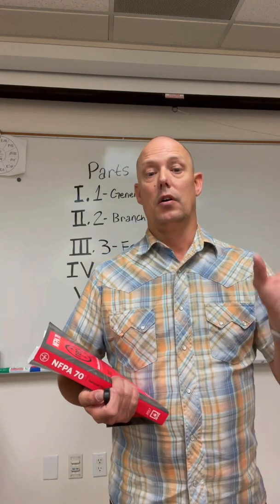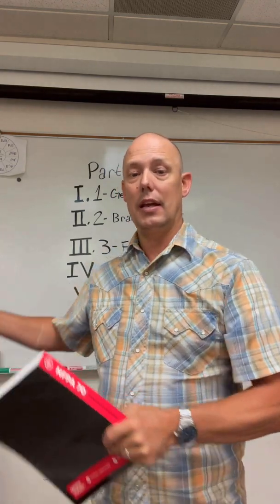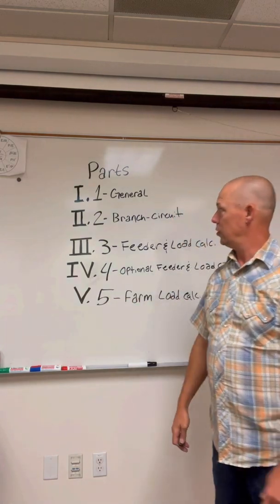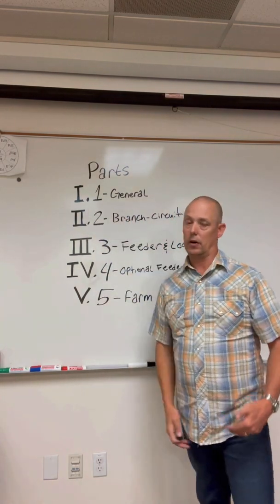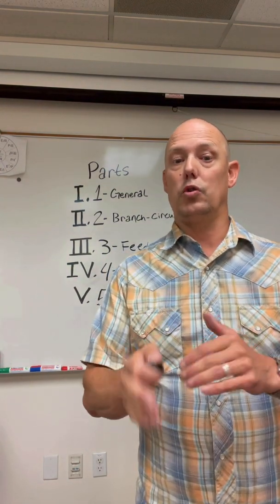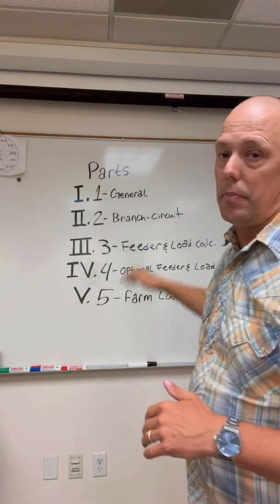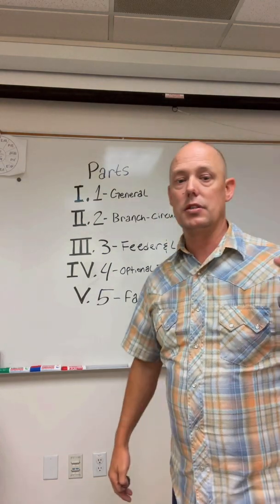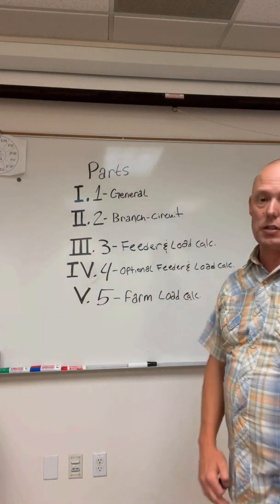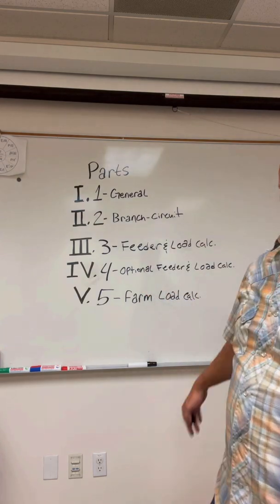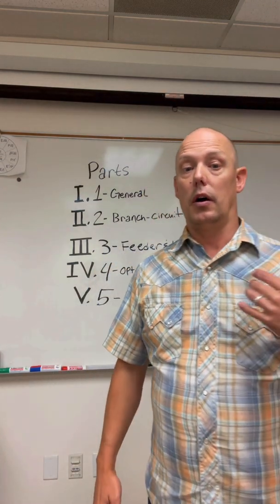For example, chapter two is wiring protection. In chapter two, we have Article 220, which is load calculations. And in Article 220, I have parts. It doesn't show that in the code book — it just gives you the numerical number. So now we're going to talk about Article 220 in chapter two and its parts. Part one is general. Part two is branch circuit. Part three is feeders and services calculations. Part four is optional feeder and service load calculations. And part five is farm calculations.